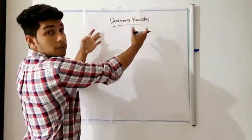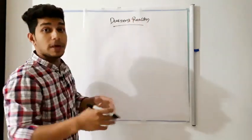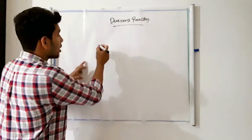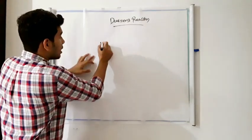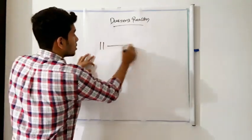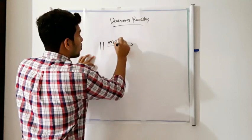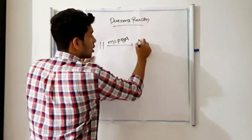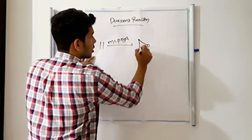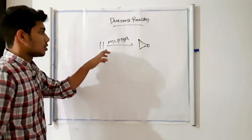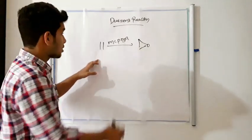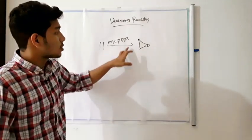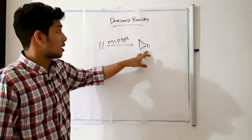This is another method for the preparation of an epoxide. Alkene reacts with meta-chloroperoxybenzoic acid (mCPBA) to form an epoxide.